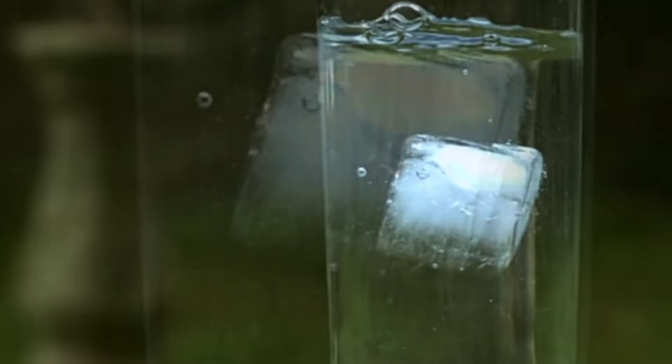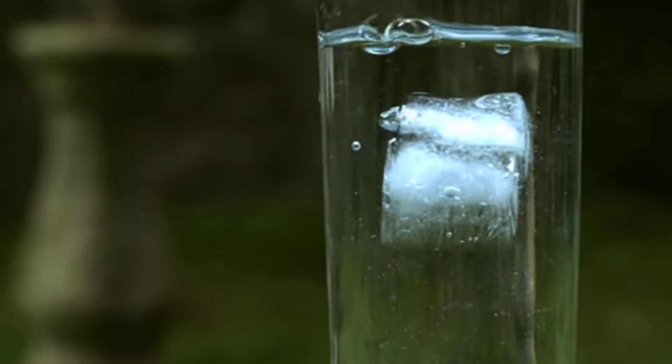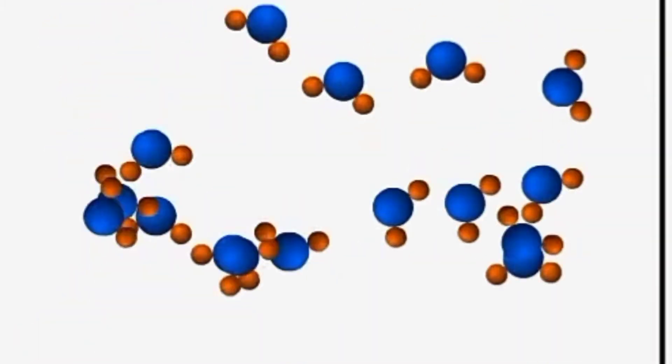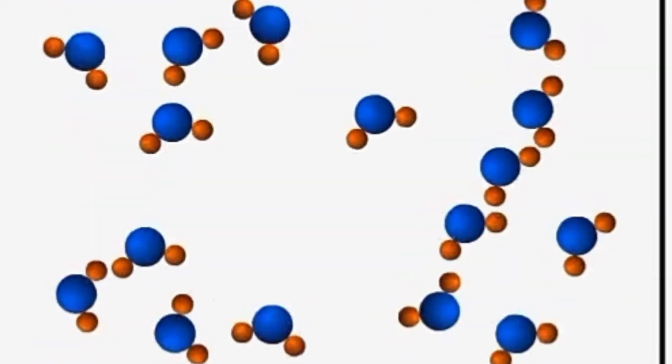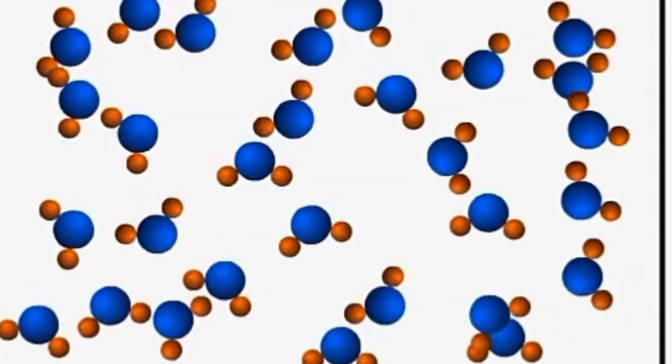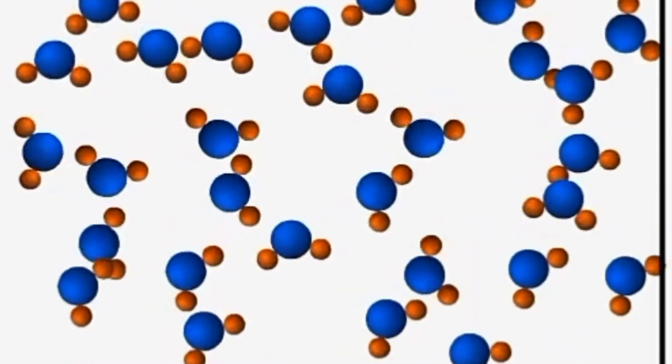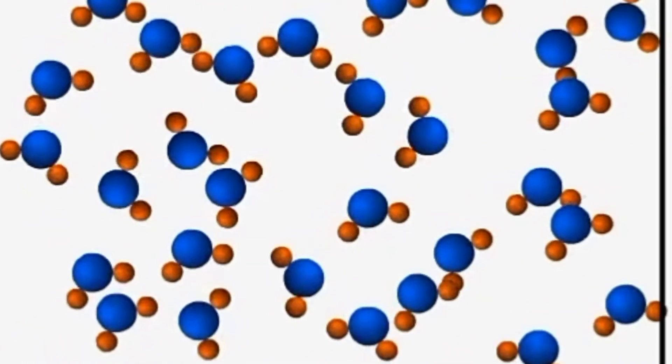When ice melts, some of the fixed hydrogen bonds are broken, and the molecules pack themselves more closely together, thereby decreasing the volume of liquid water. So density of liquid water increases.